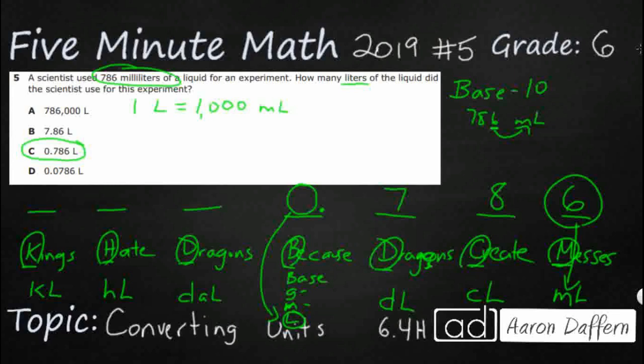And so what we can do is, if I've got 786 milliliters, when we're going from big to small, we multiply, and when we're going from small to big, we divide.